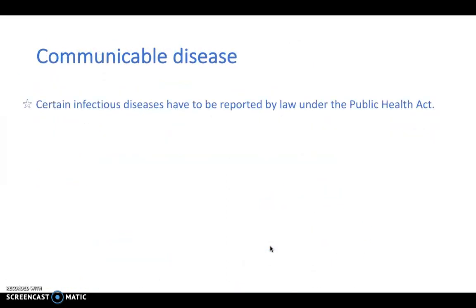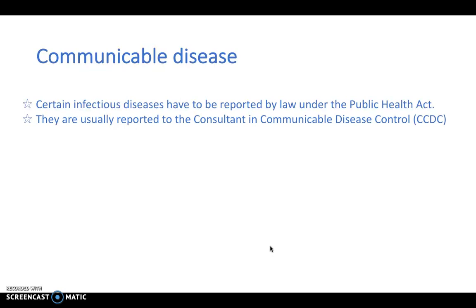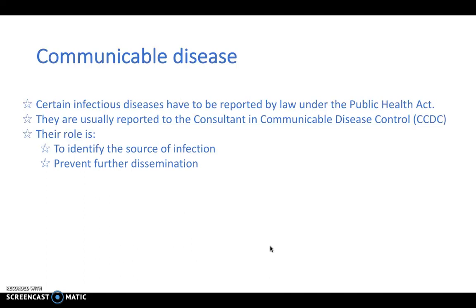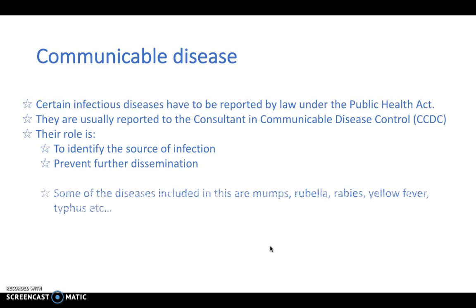Certain infectious communicable diseases have to be reported by law under the Public Health Act. They're usually reported to the consultant in communicable disease control, which every hospital will have. Their role is to identify the source of infection and prevent further dissemination of that infection. Some of the diseases included are mumps, rubella, rabies, yellow fever, and typhus, but there is actually a long list of communicable diseases that must all be reported if someone presents to any hospital with them.